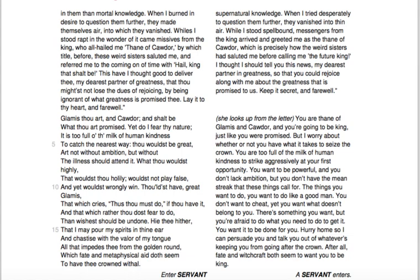This is the letter that Macbeth has written to his wife, talking about the witches. He says they seemed very supernatural but had a lot of knowledge, and they greeted him with these three titles. He wants her to know what greatness is promised for them. He calls his wife his 'dearest partner of greatness,' which alludes to the idea that Lady Macbeth and Macbeth are equal partners — which would not really be the case during Shakespearean times.